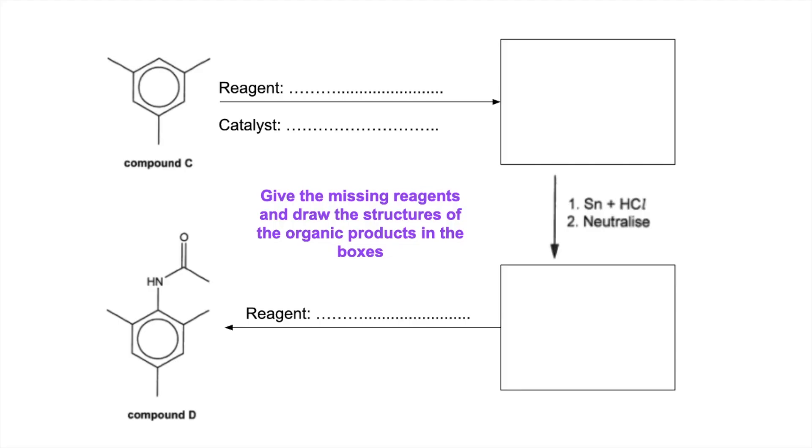Okay, so before I go through the detail of the steps, let's just look at the overall conversion. We're changing compound C into compound D, so essentially we're putting an amide group onto here.